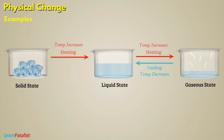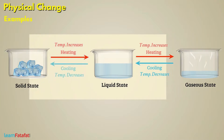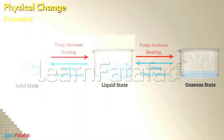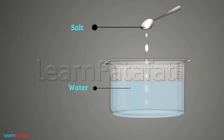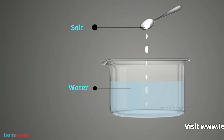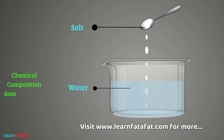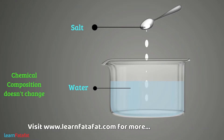Similarly, by cooling, the state can be changed from gas to liquid or liquid to solid. During the change, no new substance is formed. We mix salt and water; however, the properties of salt and water remain intact in the solution. In other words, the chemical composition of salt and water remains the same. It does not change.